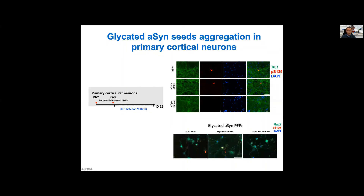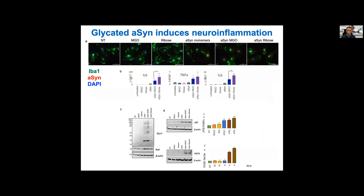We've also been investigating whether these different glycated species could induce inflammatory responses. We prepared primary microglial cultures and treated the cells with glycated alpha-synuclein by different agents. We found that glycated alpha-synuclein, both by methylglyoxal or by ribose, induces the levels of IL-6, TNF-alpha, and IL-1beta — compatible with an inflammatory response triggered by glycated alpha-synuclein.